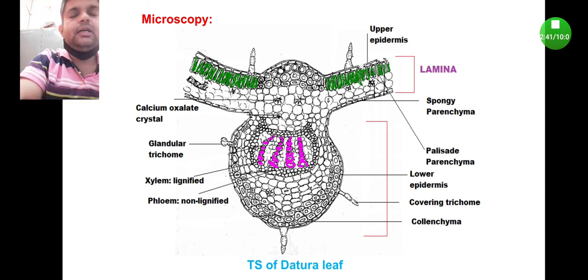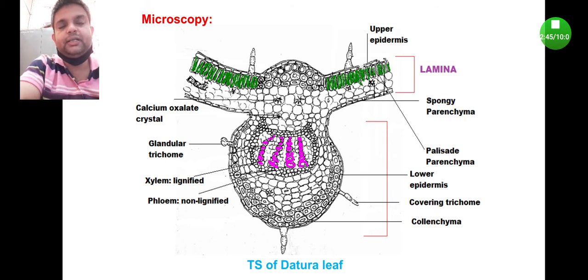Basically the microscopy of the leaf consists of two parts: the wing-like parts at the two sides are known as the lamina, whereas at the bottom you will find the round shape, which is known as the midrib.